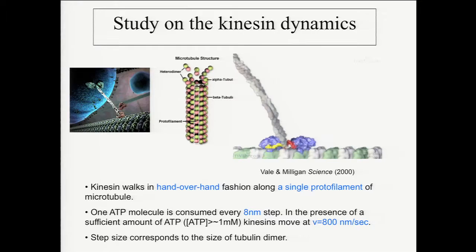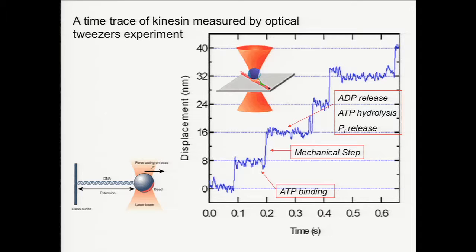Here is kinesin. They tend to walk on a microtubule with steps that are 8 nanometers apart and move with a velocity of 800 nanometers per second. From single-molecule experiments — this particular data from Steve Block's lab — you observe that the steps are 8 nanometers. The mechanical step happens as soon as ATP is bound. However, the chemistry — ATP hydrolysis — takes place in the middle. So you can separate the chemistry from the mechanical part. The binding of ATP drives the walk.